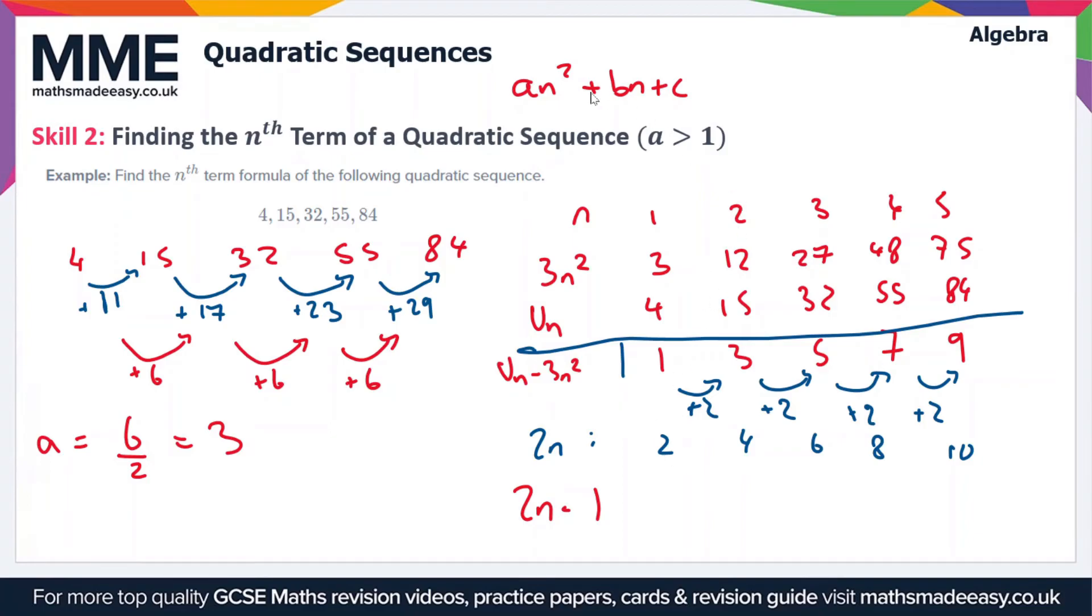So that's this sequence here. So we've got the value of a as 3, and we've got the bn plus c part right here. So all we do is put these together. So our nth term is going to be 3n squared plus 2n minus 1.